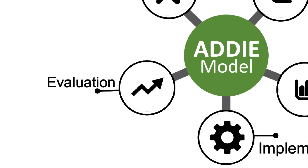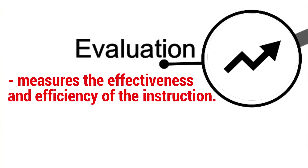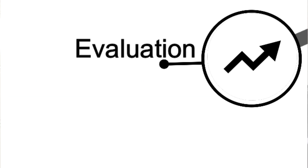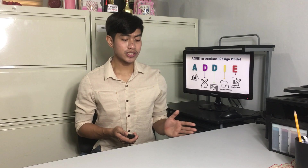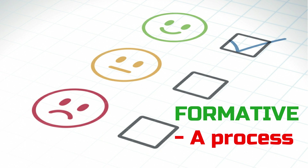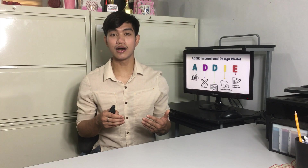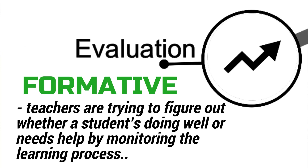The last phase in the ADDIE model is the evaluation phase. This phase measures the effectiveness and efficiency of the instruction. Evaluation should occur throughout the entire instructional design process — between phases and after implementation. Evaluation may be formative or summative. Formative evaluation is used to monitor students' learning and provide ongoing feedback to improve teaching and learning. It considers evaluation as a process, so the teacher can see student growth and figure out whether students are doing well or need help.